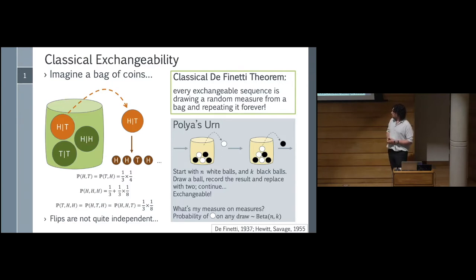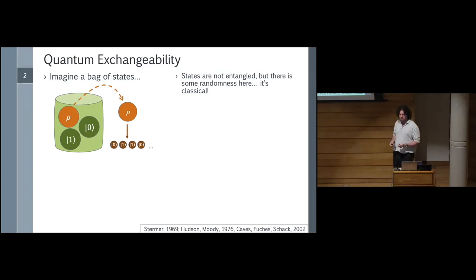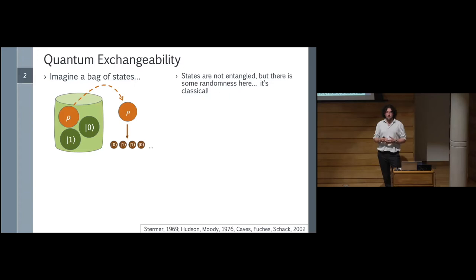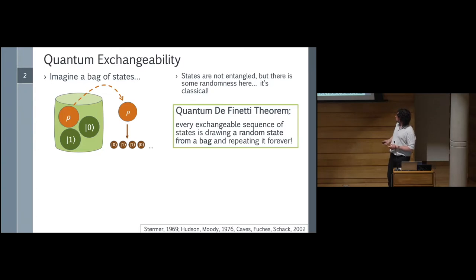This is classical exchangeability. De Finetti's theorem puts it to bed and says exchangeability is equivalent to this other thing. On the quantum side of things, we have a very similar setup. Instead of a bag of coins, we imagine a bag of states. We'll pick one state out of the bag and then use it to create a bunch of un-entangled things and measure from there. In the same way, we have an initial step of randomness and then another step, but now it's not classical both times — it's classical and then it's quantum. So though we don't have entanglement, we still seem to infer something about our states based on our observations.